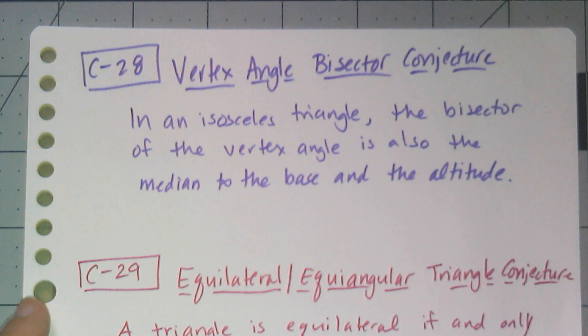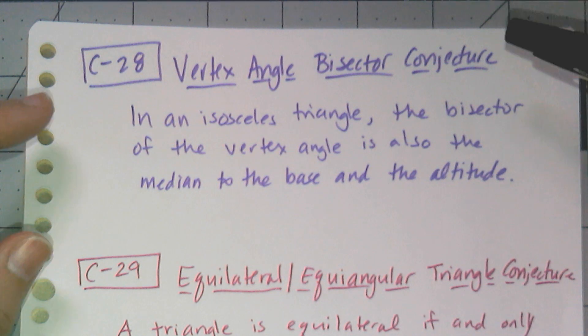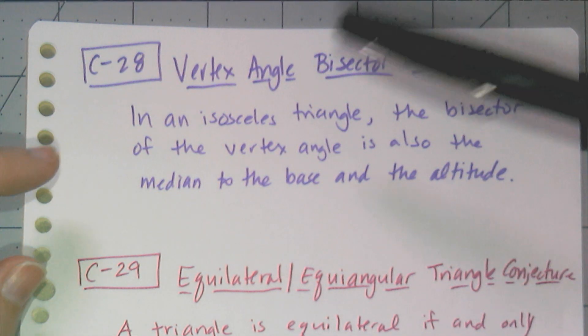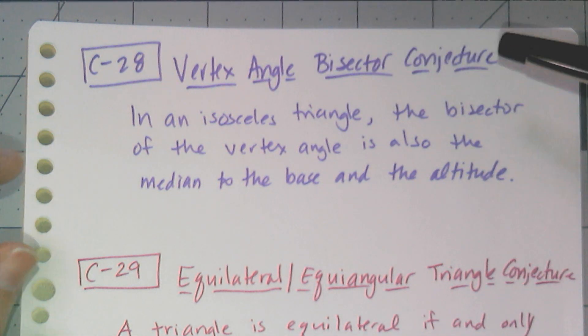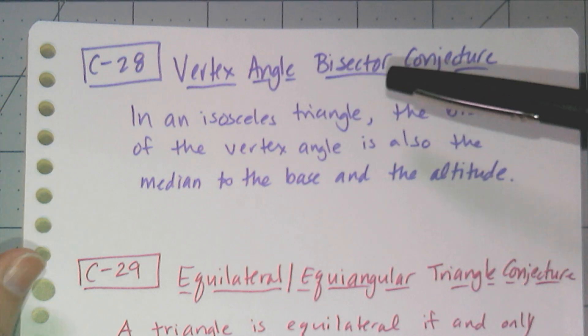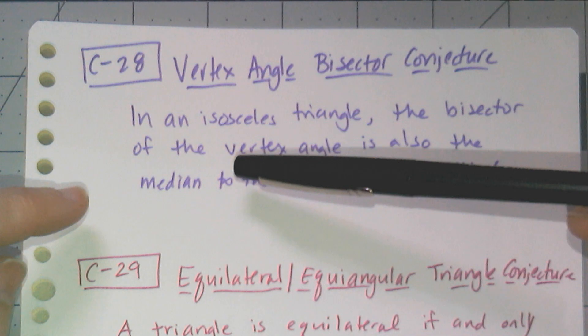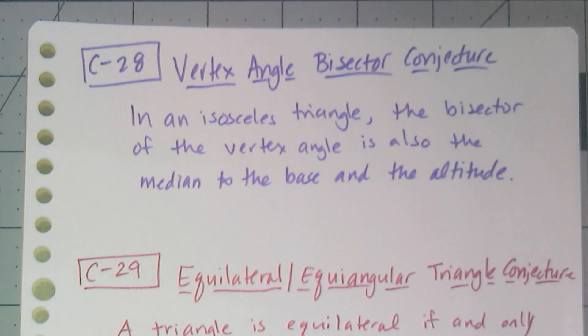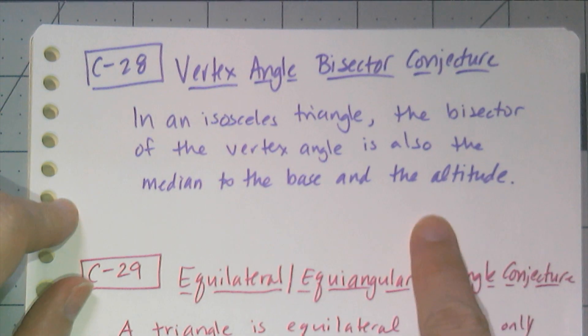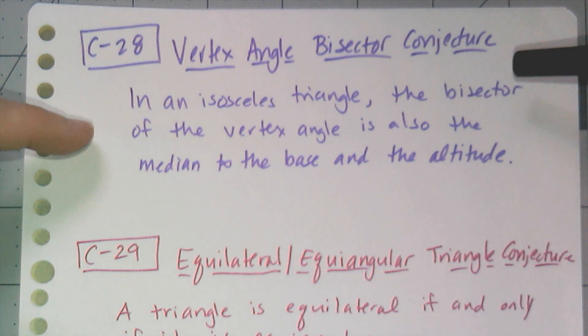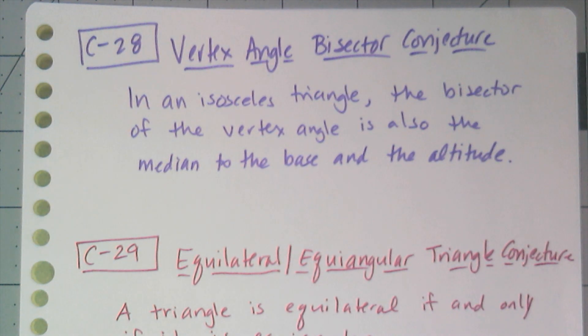Now what we just proved with that flowchart was half of conjecture 28, the vertex angle bisector conjecture. It says in an isosceles triangle, the bisector of the vertex angle is also the median to the base. That's the part we proved. And the altitude, which has yet to be proven. Now we already knew this was true from our work with points of concurrency, but now we can actually prove that it's true without having to do constructions.